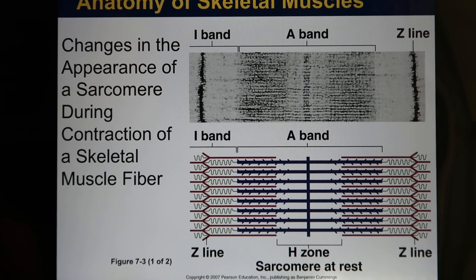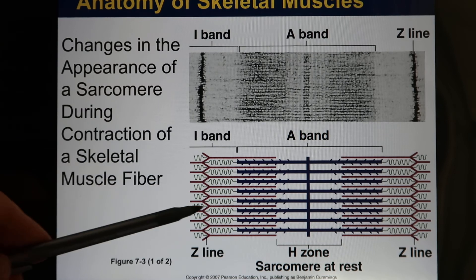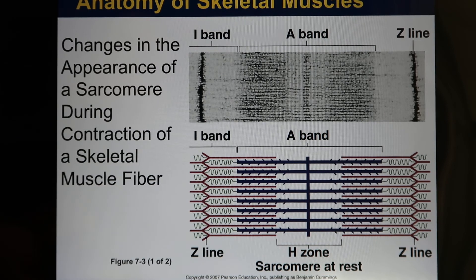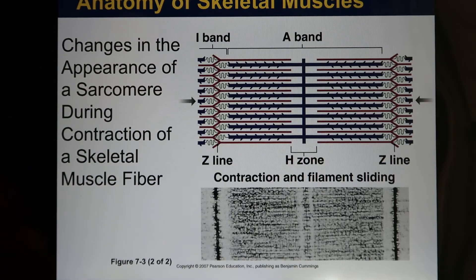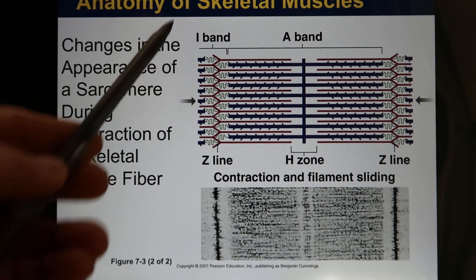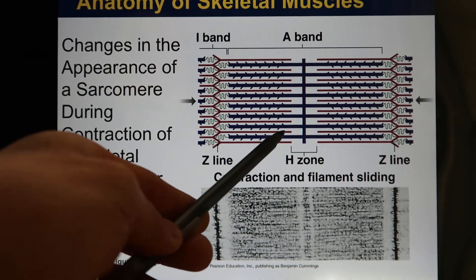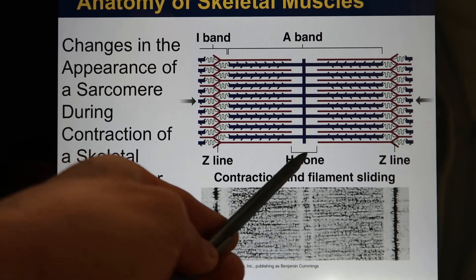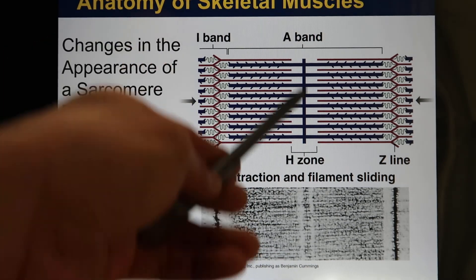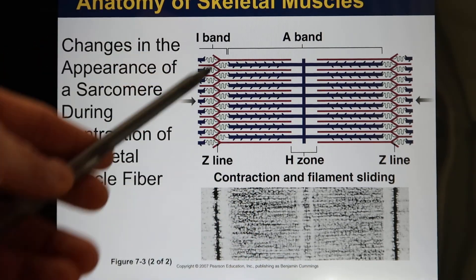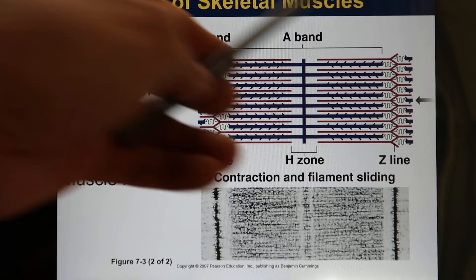When the muscle is relaxed, that's how the sarcomere looks. When muscle contraction happens, they overlap more — the I-band becomes shorter, the H-zone becomes shorter and sometimes disappears, and the A-band remains the same.